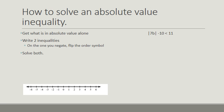To solve an absolute value inequality, we're going to get the absolute value symbol alone — just like with an absolute value equation. Then we're going to write two inequalities, but on the one where we negate the side without the symbols, we're going to flip the order symbol.